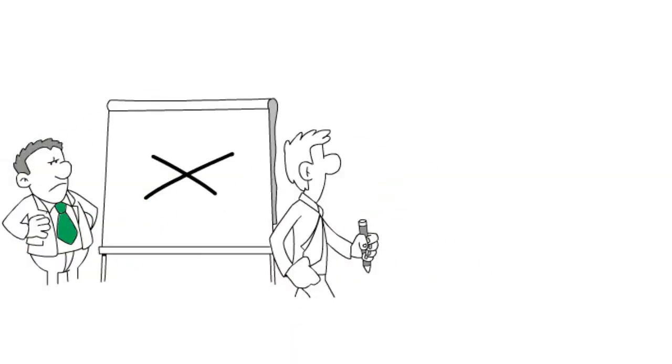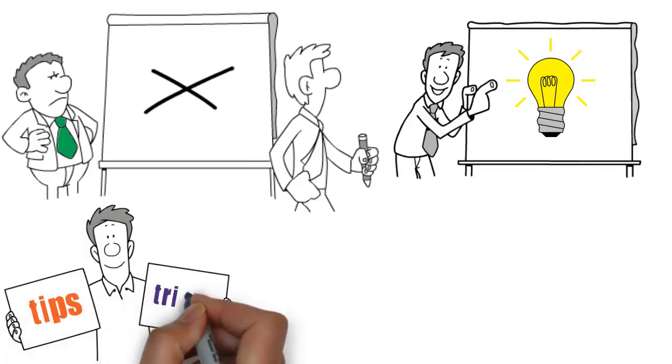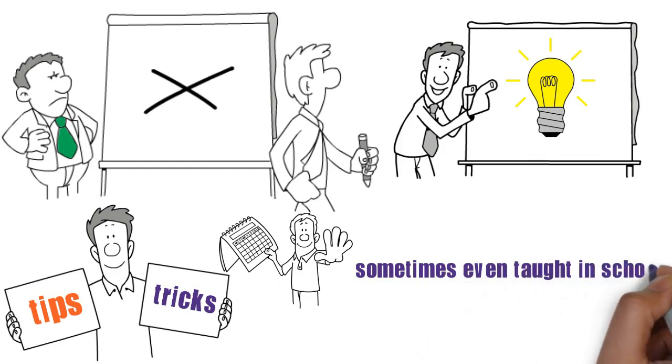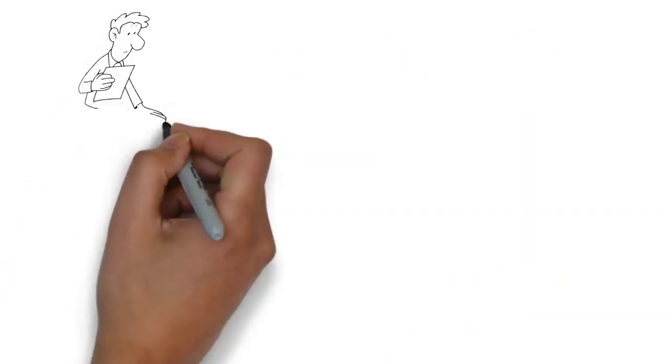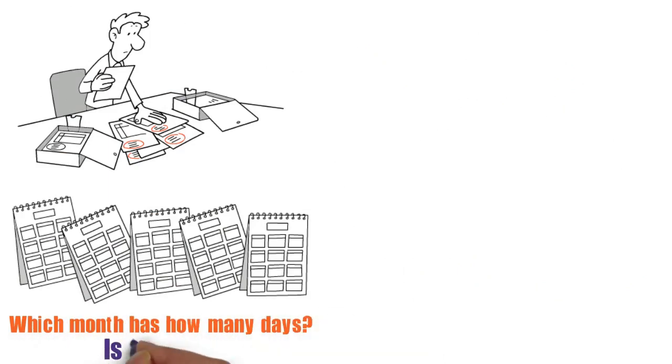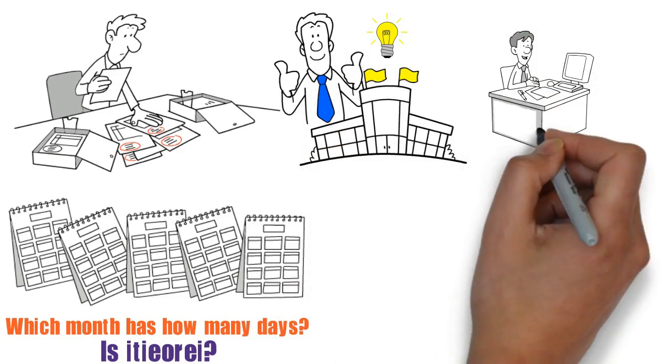Newer is not always better; sometimes it's just newer. There are little tips and tricks that have been around for years, sometimes even taught in school, to help people remember facts. For those who struggle with which month has how many days or is it IE or EI, the six old-school tips that follow may be of great help to you. Keep watching and see if any of these ring a bell.